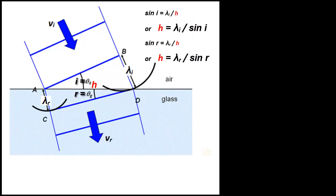And what we want to do is rewrite these equations solving for H, as shown on the screen, and then set them equal to each other. So we get lambda I over sine I is equal to lambda R over sine R.